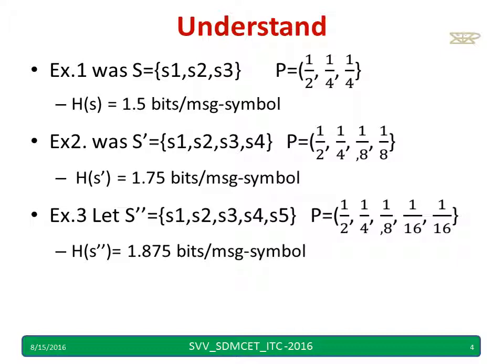In the second example I took s1, s2, s3, s4 with the same probabilities 1/2, 1/4, but s3 is divided into two sub-symbols — you can call them s31 and s32, or s3 and s4. The probability 1/4 is divided into 1/8 and 1/8. This gives entropy 1.75 bits.